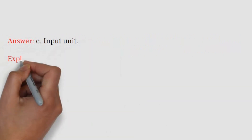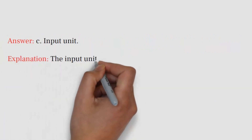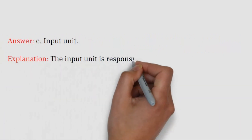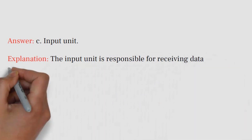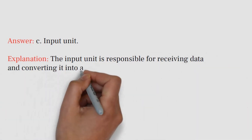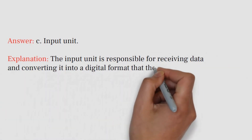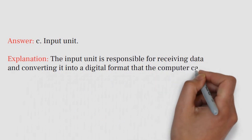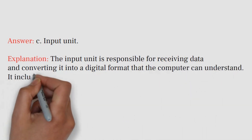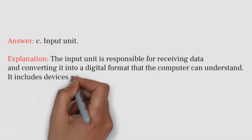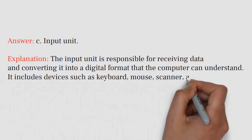Answer: C. Input unit. Explanation: The input unit is responsible for receiving data and converting it into a digital format that the computer can understand. It includes devices such as keyboard, mouse, scanner, and microphone.